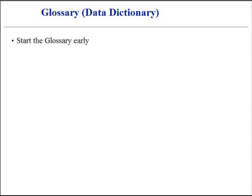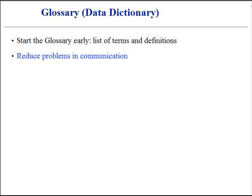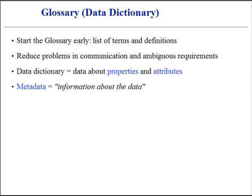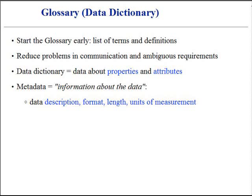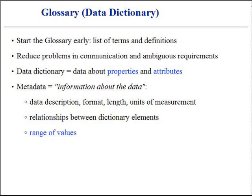The following tips are important to keep in mind regarding the system glossary or dictionary. Start the glossary early. In its simplest form, the glossary is a list of noteworthy terms and corresponding definitions. It is surprisingly common that a term, often technical or particular to the domain, may be used in slightly different ways. This needs to be resolved to reduce problems in communication and ambiguous requirements. The glossary can also play the role of a data dictionary. Such phenomena become the metadata, or information about the data itself. Dictionary attributes could include aliases such as description, storage format, type, data length, and units of measurement. Dictionary attributes could also include relationships between dictionary elements, range of values, and validation rules.